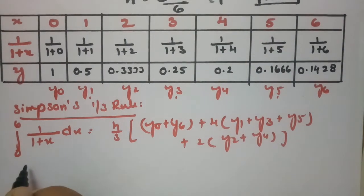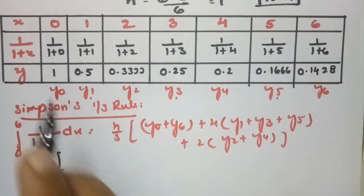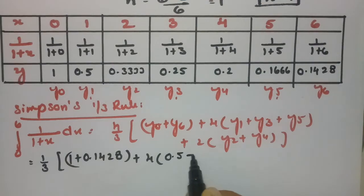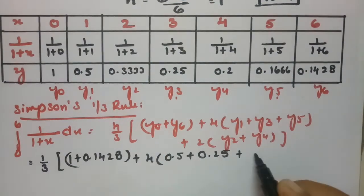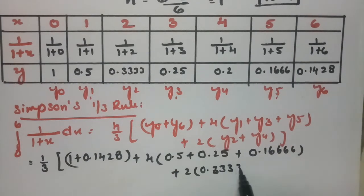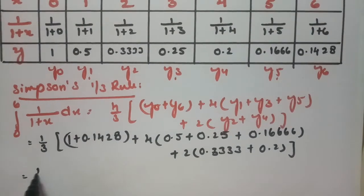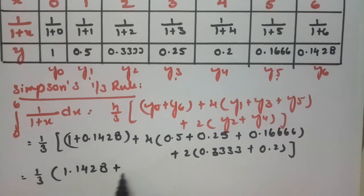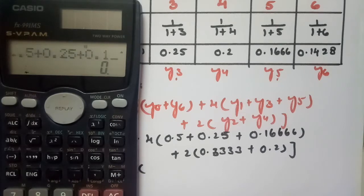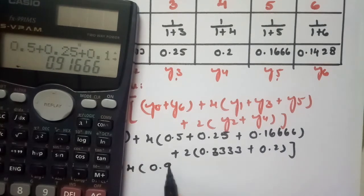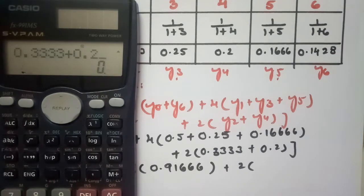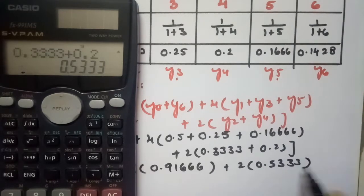Substituting h = 1 into Simpson's one-third rule: (1/3) × [(1 + 0.1428) + 4×(0.5 + 0.25 + 0.1666) + 2×(0.3333 + 0.2)]. This gives (1/3) × [1.1428 + 4×(0.91666) + 2×(0.5333)].